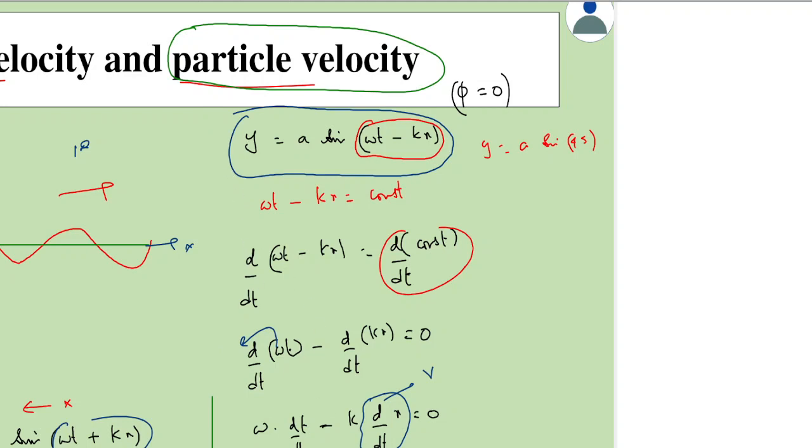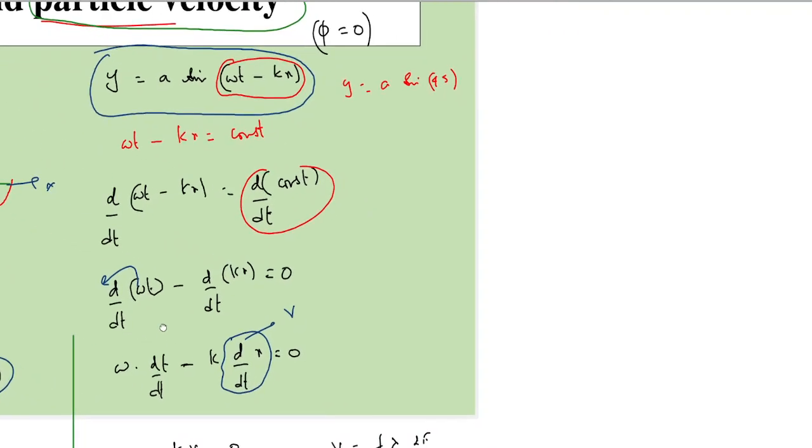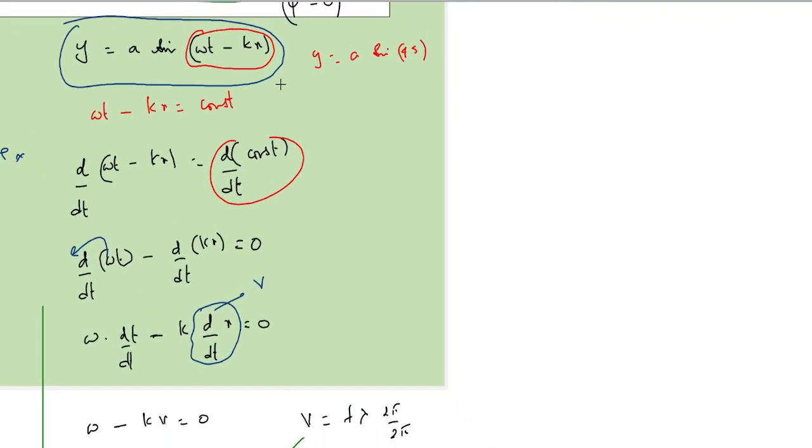If you want to find any particle's velocity, we should differentiate this term. It's already been done in case of simple harmonic motion. If you differentiate it, then the velocity of the particle would be A into omega into cos of omega t minus kx.